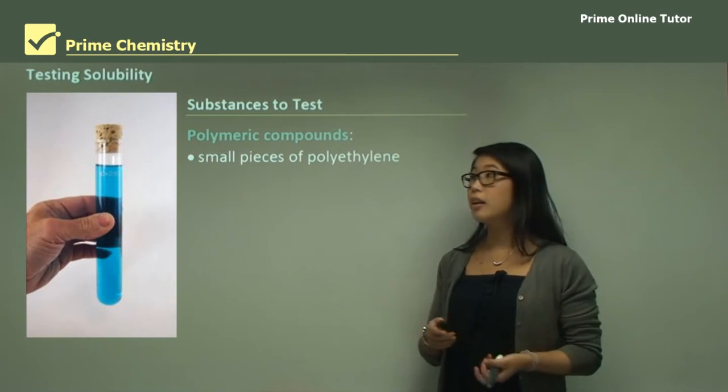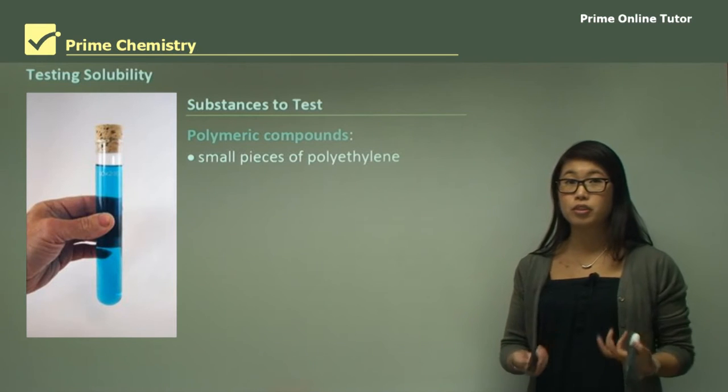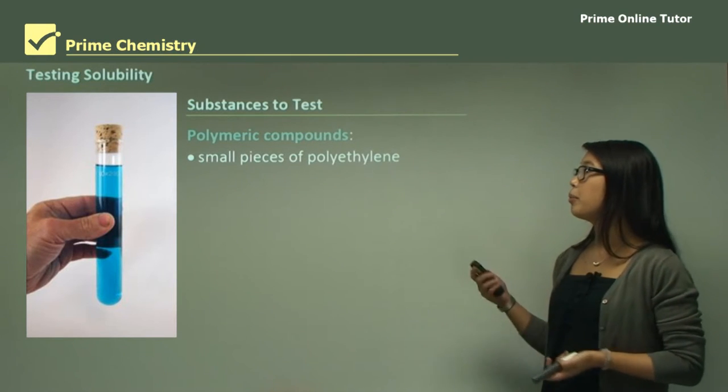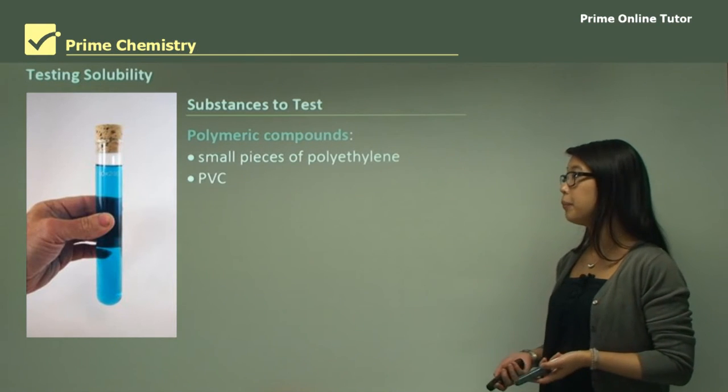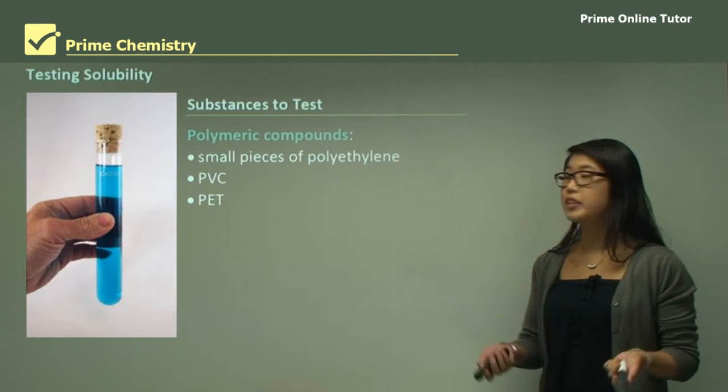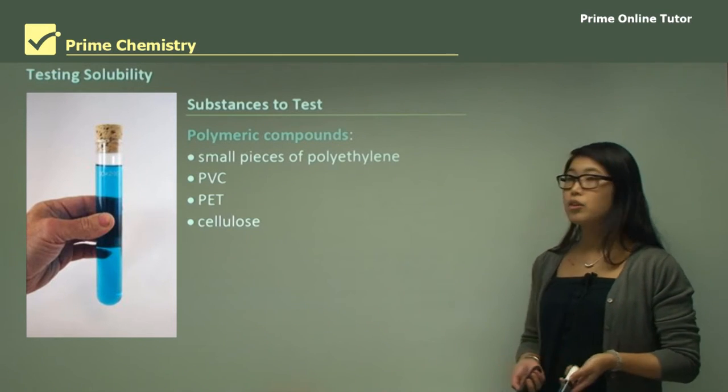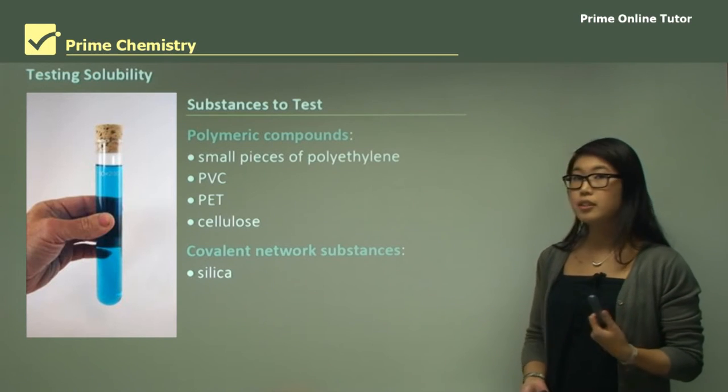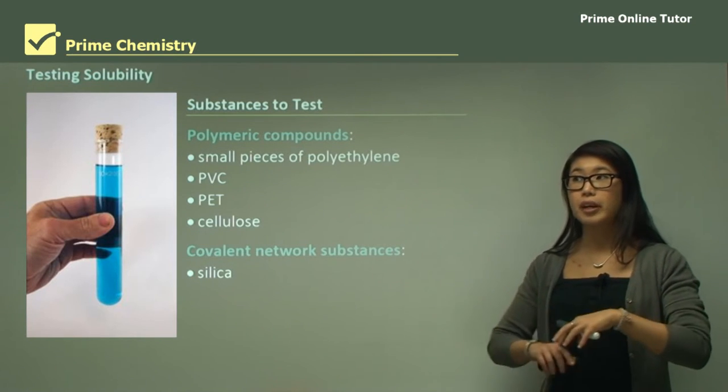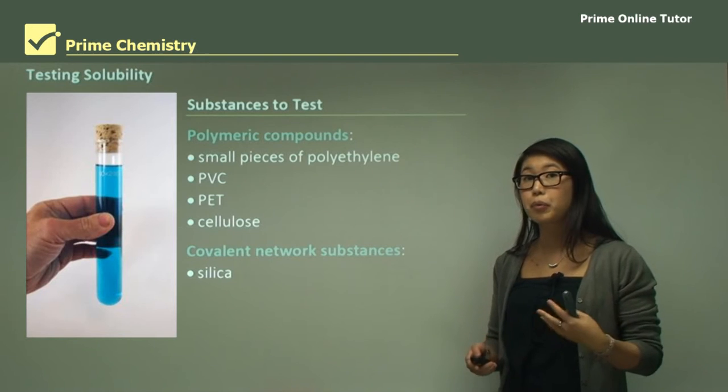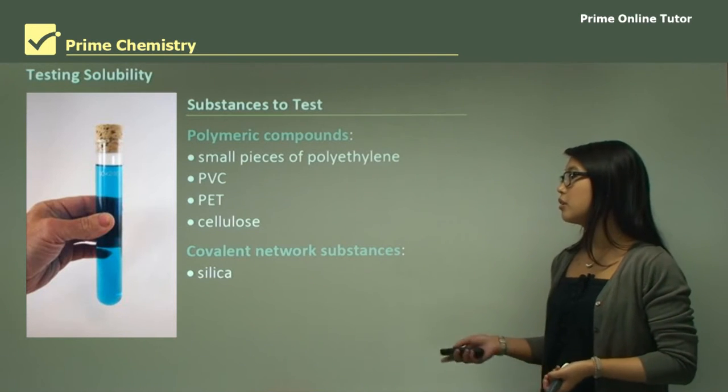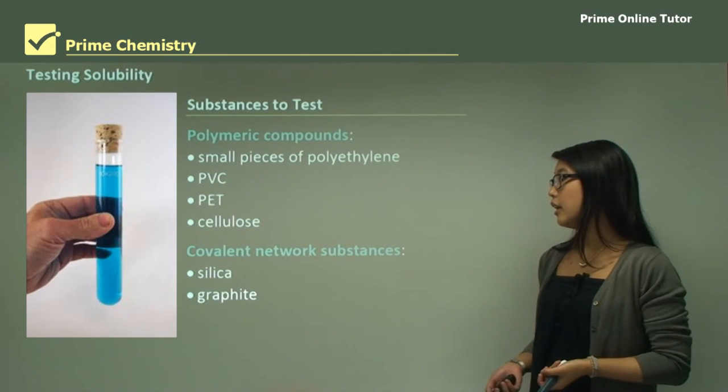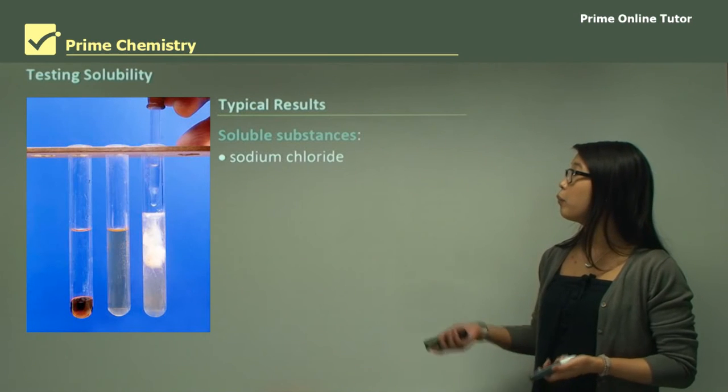Poly means many, so it's going to be like a polymer, plastic-type things. So small pieces of polyethylene, PVC, PET—all of these are plastics—and cellulose, which is a sugar. Covalent network substances, remember it's like a crystal structure of covalent bonds not ionic bonds, so that's silica and graphite.